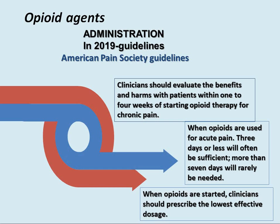In 2019, the American Pain Society elaborated guidelines for the administration of opioid agents. Clinicians should evaluate benefits and harms with patients within one to four weeks of starting opioid therapy for chronic pain. For acute pain, three days or less will often be sufficient, and more than seven days will rarely be needed.